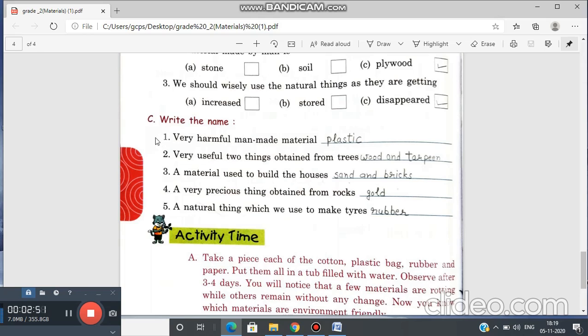Second is very useful two things obtained from trees. These are very useful. What are two these things? Yes. Wood and tarpene.